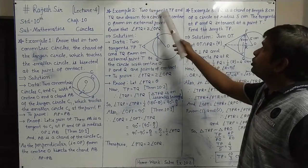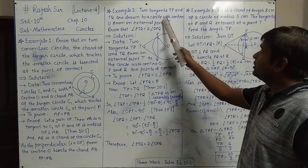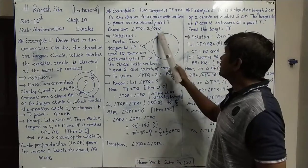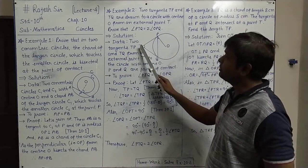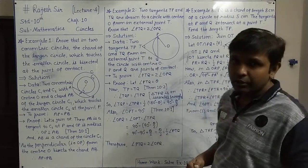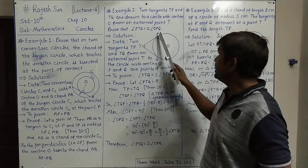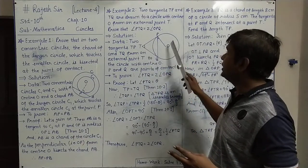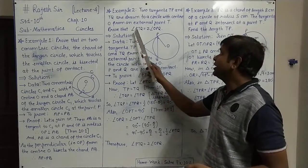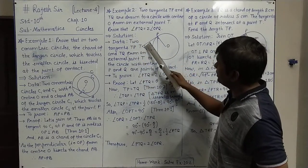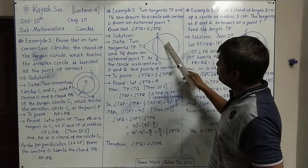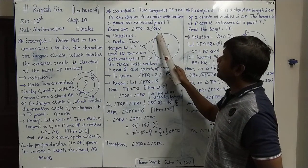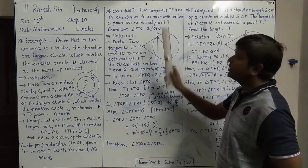Example 2: Two tangents TP and TQ are drawn to a circle with center O from an external point T. Points P and Q are the points of contact. To prove: angle PTQ is twice angle OPQ.